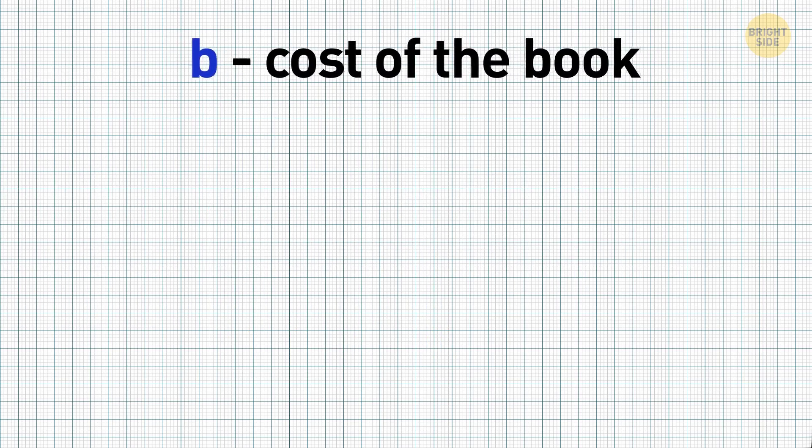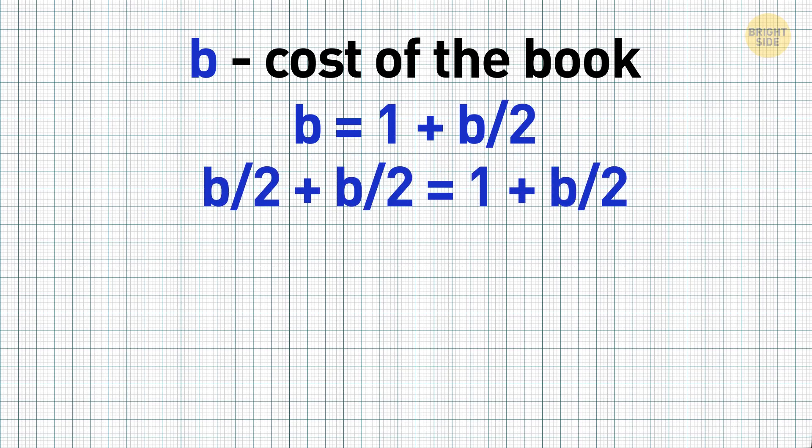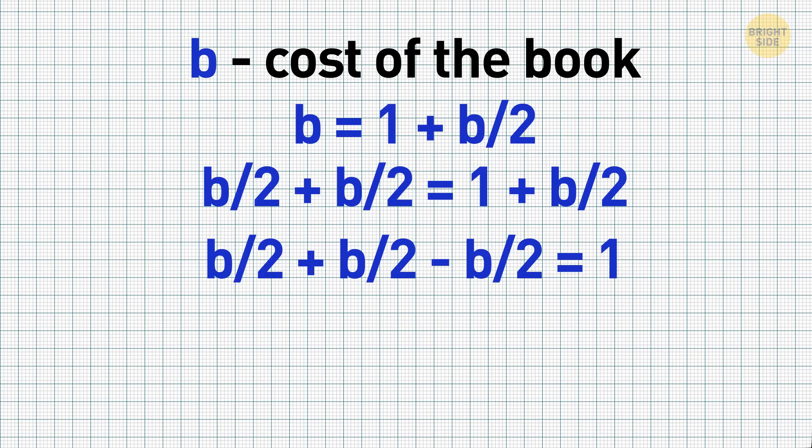To solve this riddle, you need to build an equation where B is the cost of the book, and you have to find it. The equation will look like this: B equals 1 plus B over 2. Because to find B, you need to add 1 and half the B. To make it simple, let's write B as B over 2 plus B over 2 in the left side, getting B over 2 plus B over 2 equals 1 plus B over 2. Now we can transfer B over 2 from the right side over to the left, and get B over 2 plus B over 2 minus B over 2 equals 1. Subtracting B over 2 from itself leaves us with B over 2 equals 1. So the only thing left to do is multiply 1 by 2, and you'll get B. The answer is B equals 2.